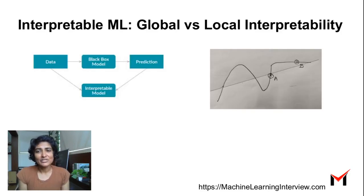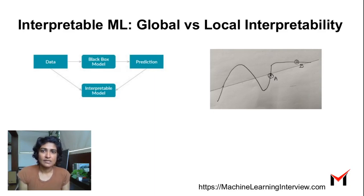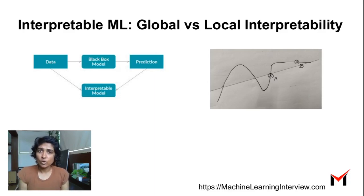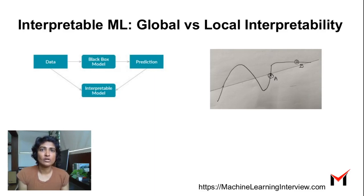To recapitulate: interpretable ML typically involves building simpler models to interpret black box models and understand why certain predictions are made. With global interpretability, while we do get global insights, we might not get accurate information on why a specific data point got the prediction that it did. Hence we have local interpretability models such as LIME and SHAP.